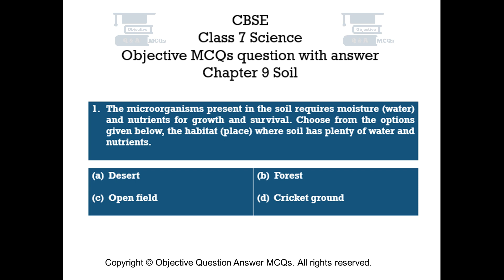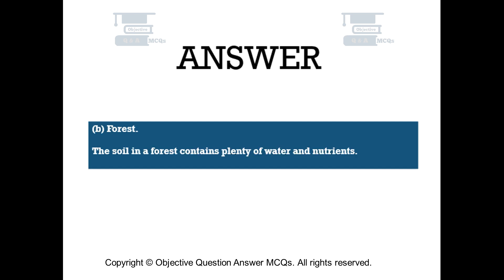Option A: Desert. Option B: Forest. Option C: Open Field. Option D: Cricket Ground. The right answer is Option B — Forest. The soil in a forest contains plenty of water and nutrients.